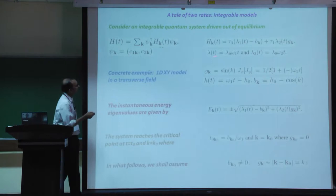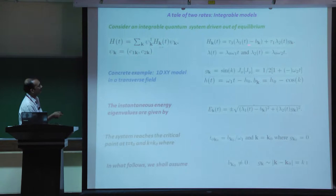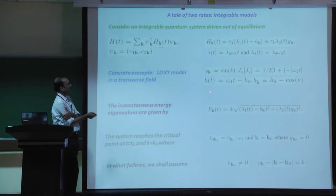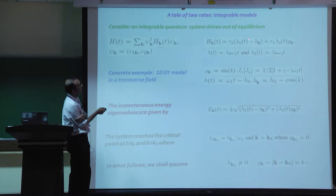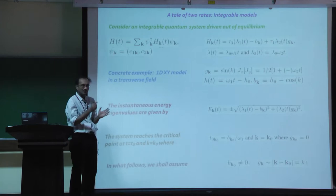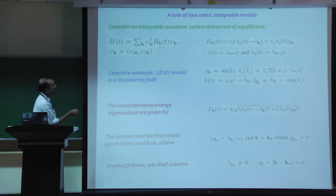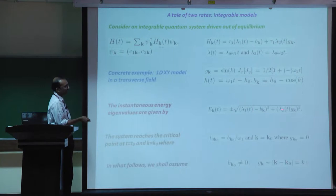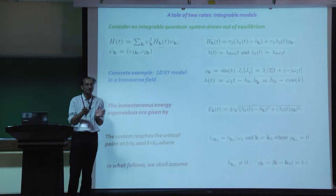I will take a standard class of models represented by free fermions - two-level fermions. Concrete examples include the 1D XY model in a transverse field, where the parameters lambda_1, b_k, and tau_2 correspond to J_x, J_y, and h. The instantaneous energy gap takes a specific form, and the off-diagonal term also varies as a function of time, so this is no longer a standard Kibble-Landau-Zener problem.